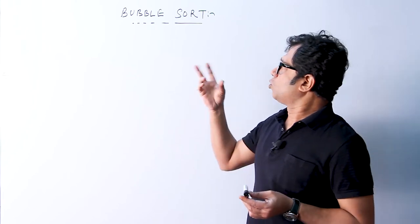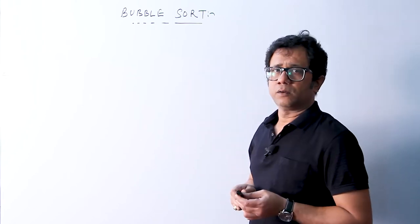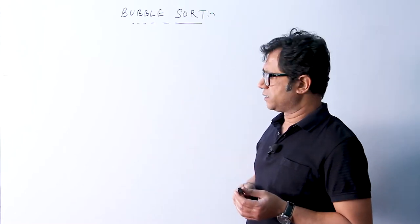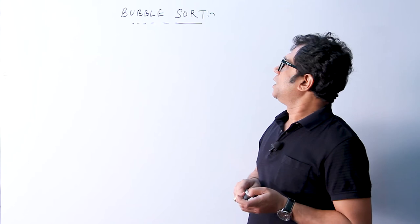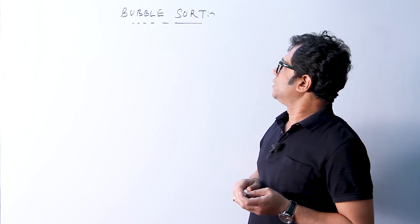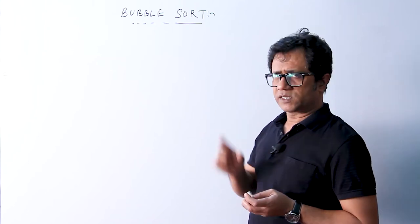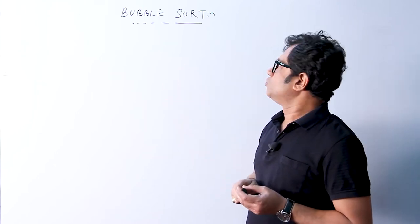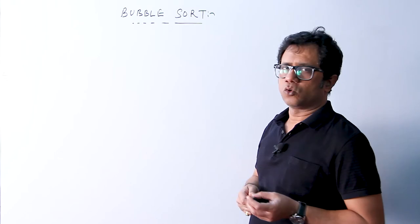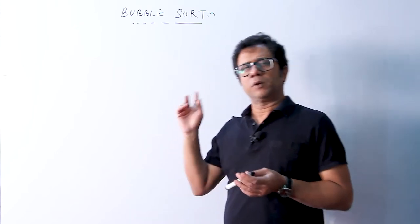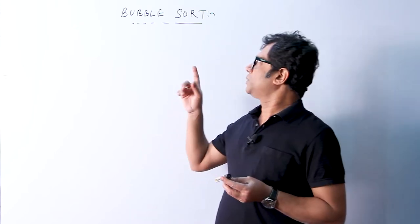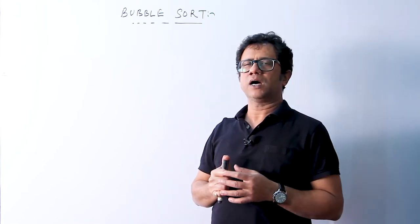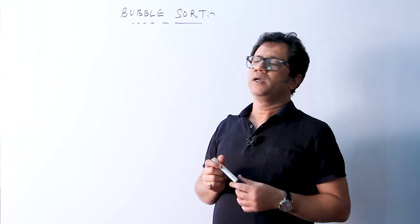I will go on to write the code of this bubble sort technique and make you understand what the details are and how the process takes place with reference to a small example array. Bubble sort is a very simple technique for sorting an array into ascending or descending order. I will sort the array in ascending order.